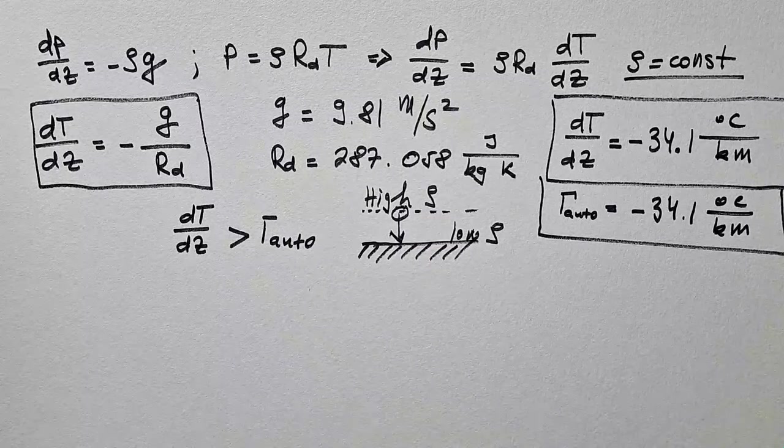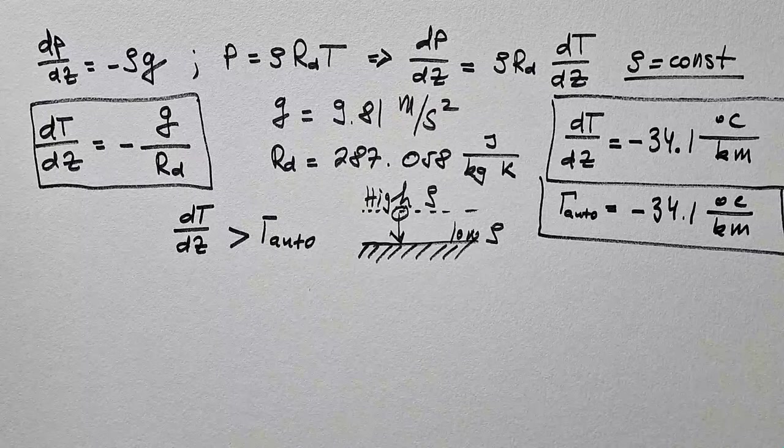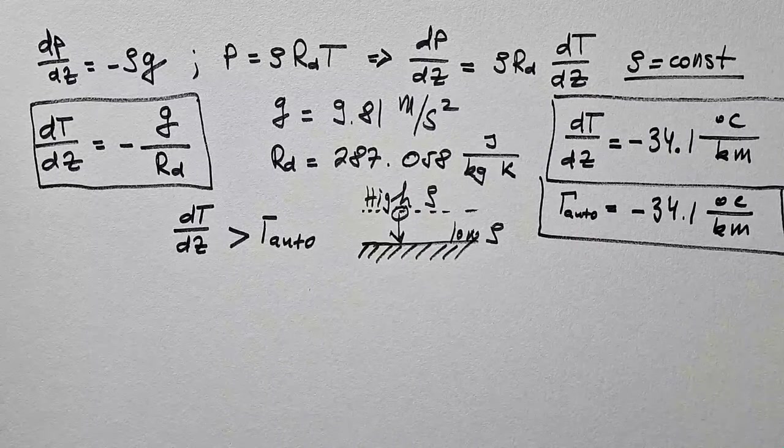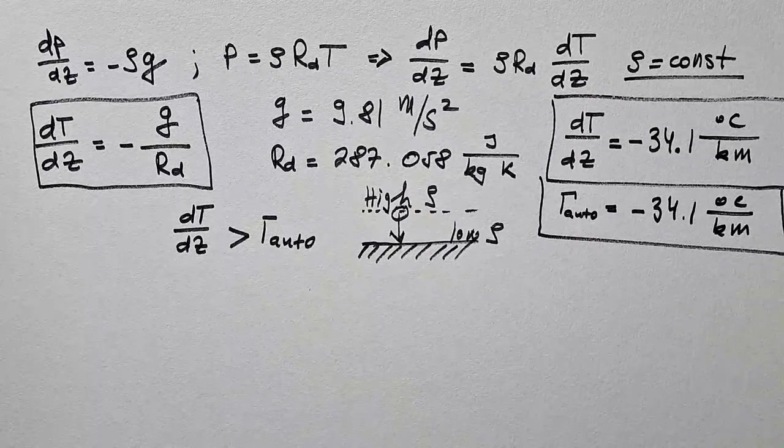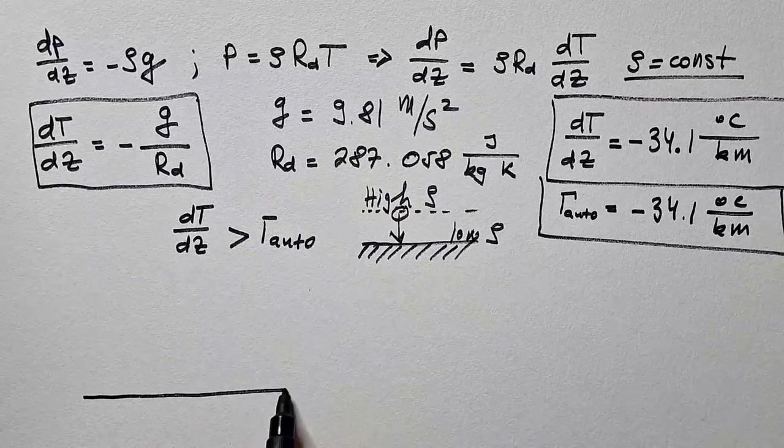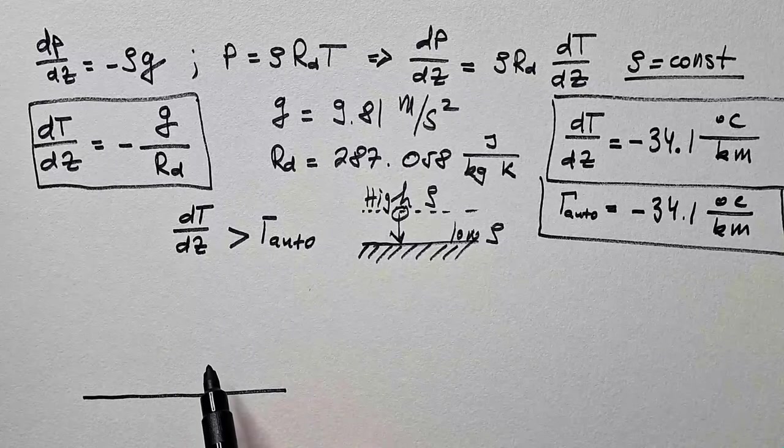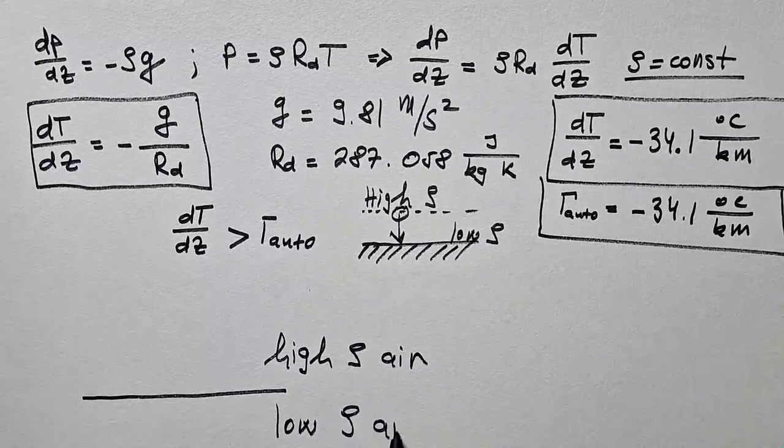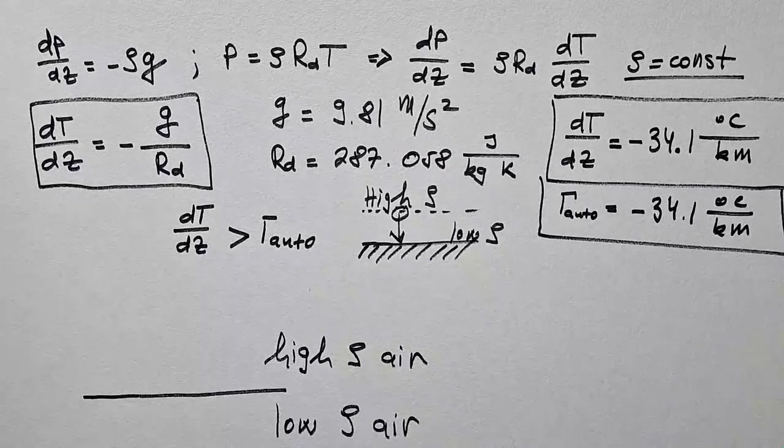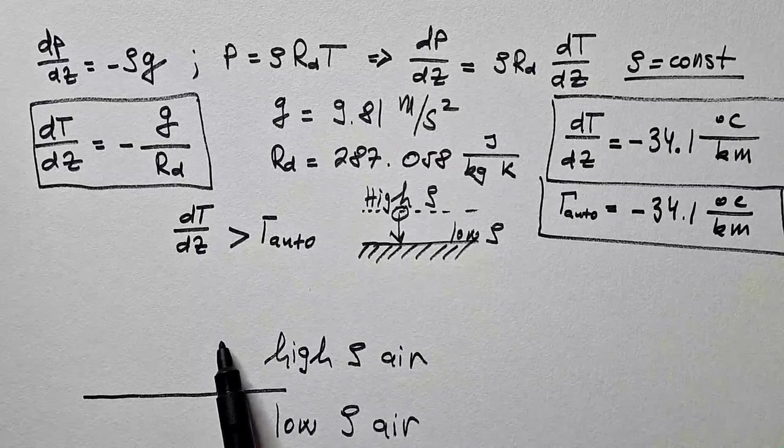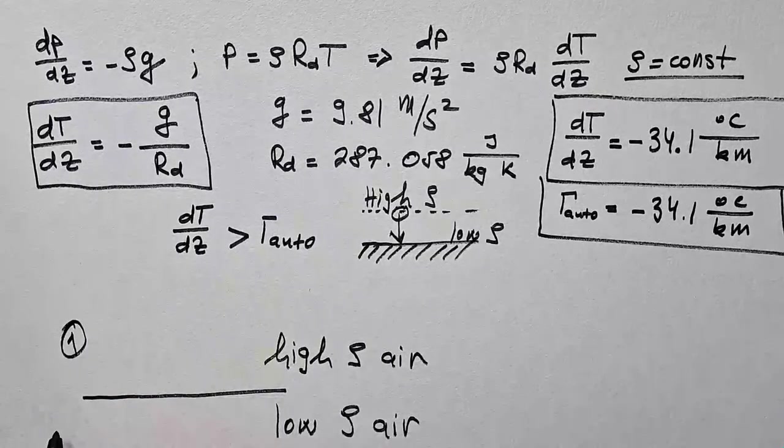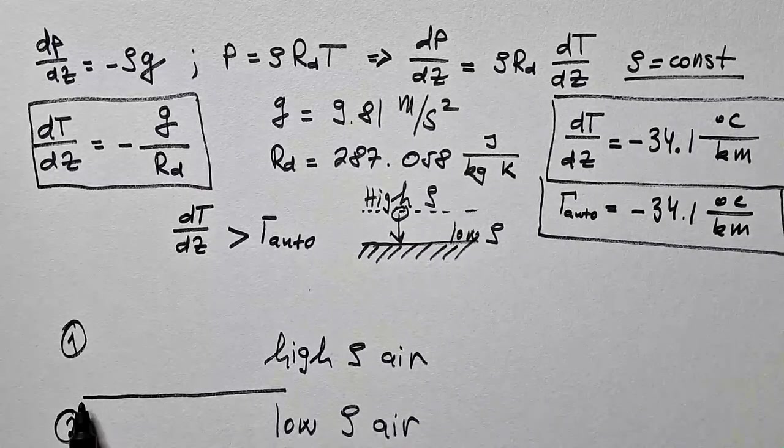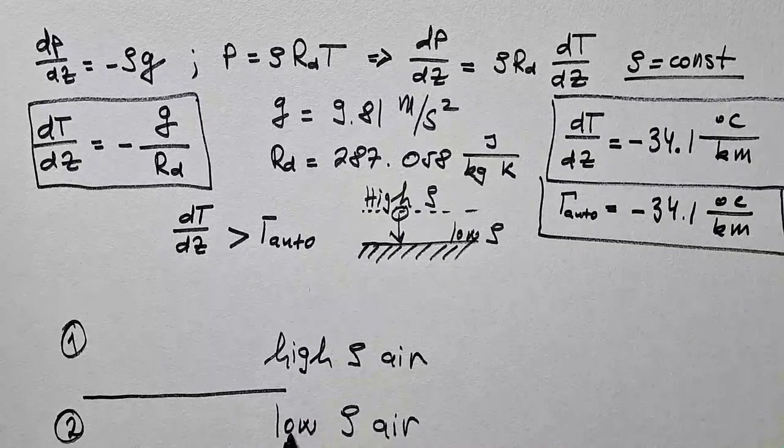But before I do that, I will just qualitatively explain some basic principles of light refraction. I will not go into any equations, but kindly note that everything that I will say here follows from Snell's law that I believe you learned in high school. Let's say I have a plane and here I have high density air, and here I have low density air. This is not some sharp surface, this is just to indicate that here density of air is somewhat higher than here.